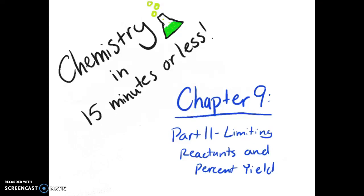Hello and welcome to episode 22 of Chemistry in 15 minutes or less. My name is Audra and this review lesson is on chapter 9, part 2, limiting reactants and percent yield.